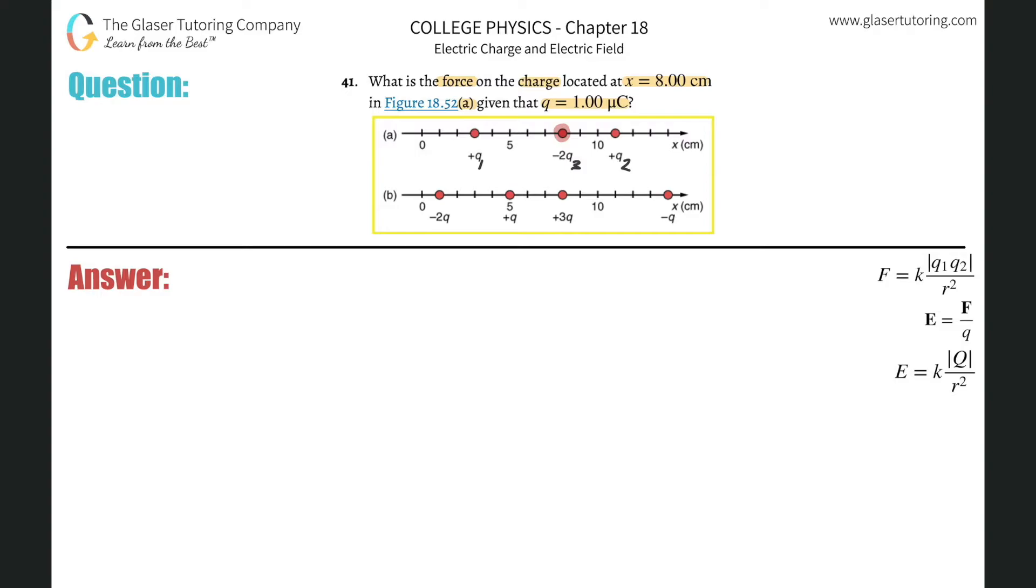So basically this is a positive charge, this is a negative charge. They're going to be attractive, right? So the force of q1 on q3 here will be pointing to the left. And I'll label that F13.